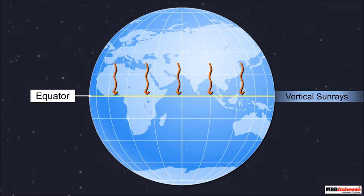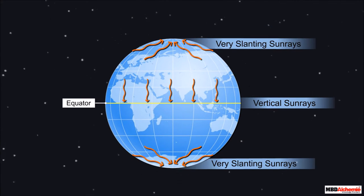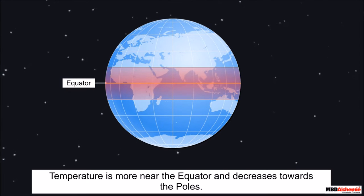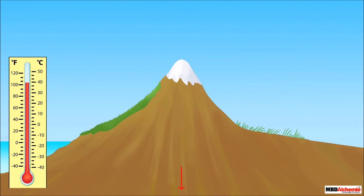Due to the spherical shape of the earth, the sun rays fall differently on different parts of the earth's surface. The sun rays fall vertically on the equator throughout the year and are very slanting towards the two poles. Therefore temperature is more near the equator and decreases towards the poles.